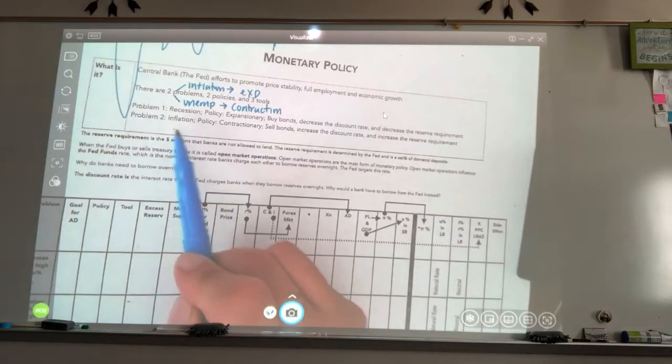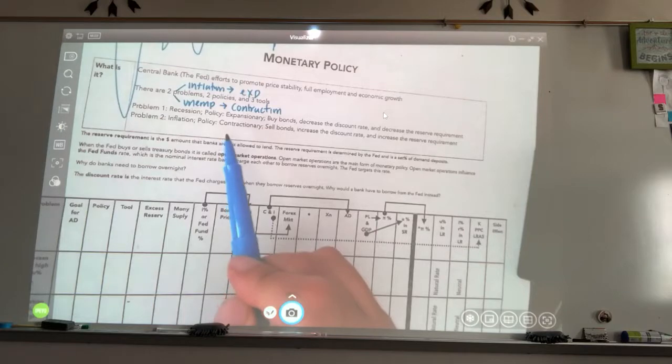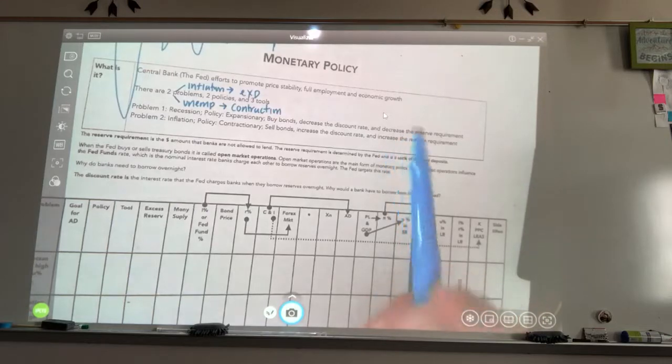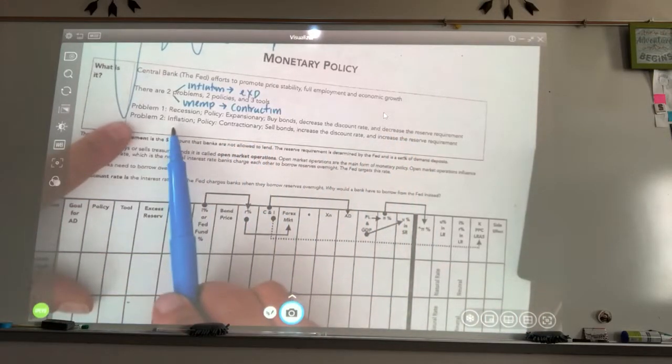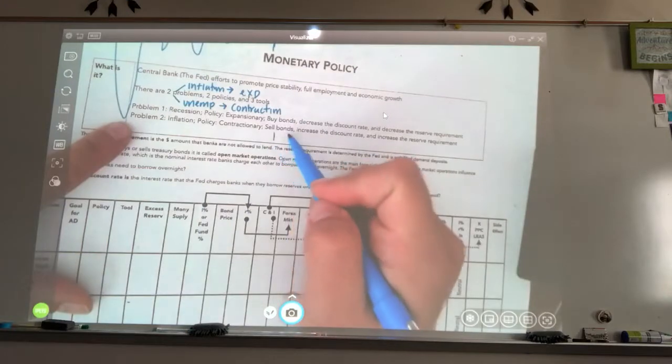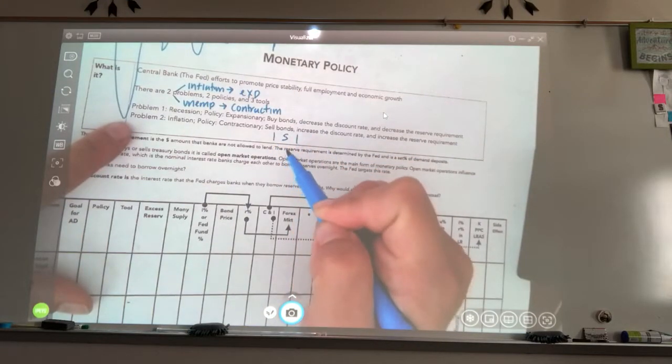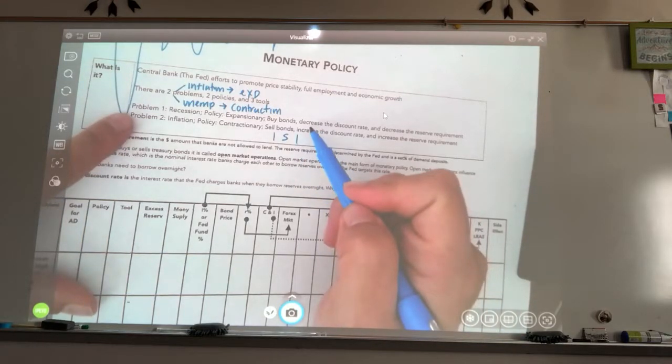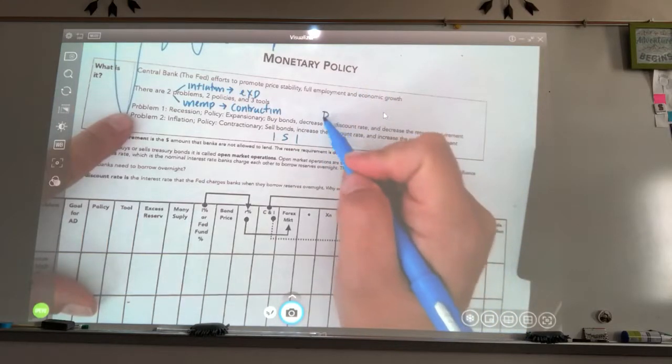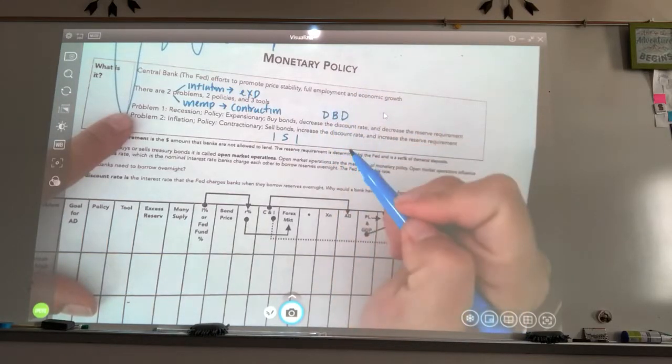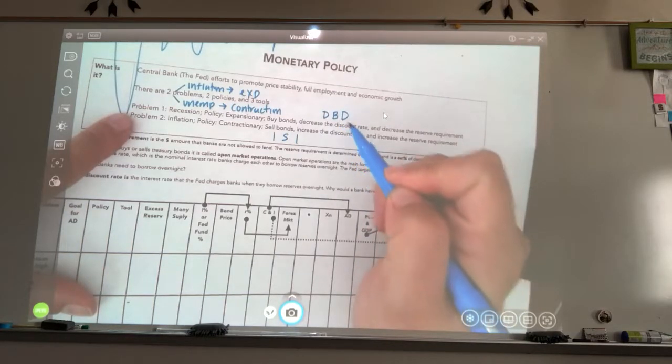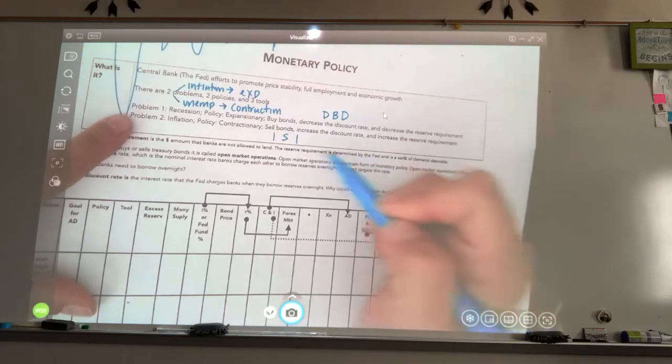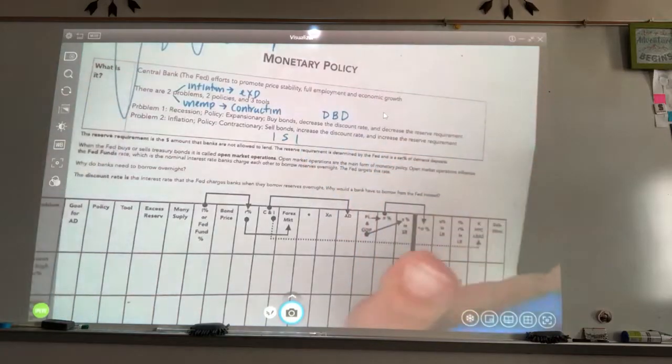Inflation, which is in an expansion, they use contractionary or tight. They tighten up the money supply. And they'll sell, increase the discount rate, and increase the reserve requirement. So I always remember with problem two, inflation, I always remember International Sports Illustrated: increase the reserve requirement, sell those bonds, and increase that discount rate. On a contraction where we're using that expansionary, I always remember down, boy, down: decrease the reserve requirement, buy those bonds and decrease that discount rate.